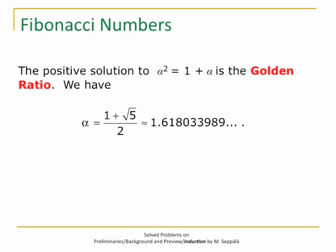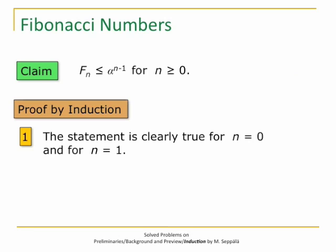The golden ratio is defined as the positive solution to the equation alpha squared equals 1 plus alpha. This positive solution is 1 plus square root of 5 divided by 2, and it is approximately 1.618. We claim that the Fibonacci numbers FN satisfy FN is at most alpha to the power of N minus 1, for N greater or equal to 0, and we prove this by induction.